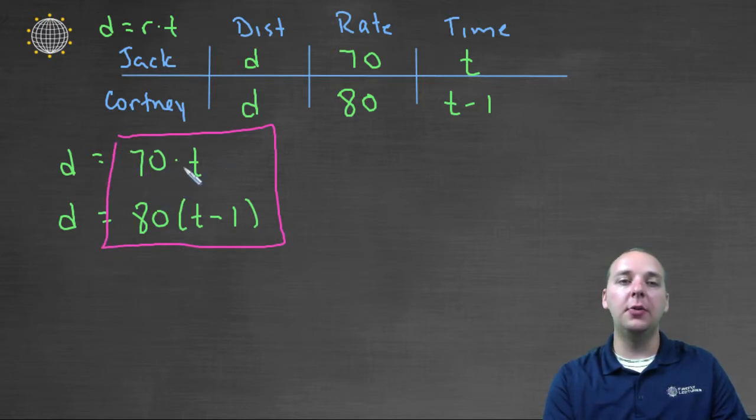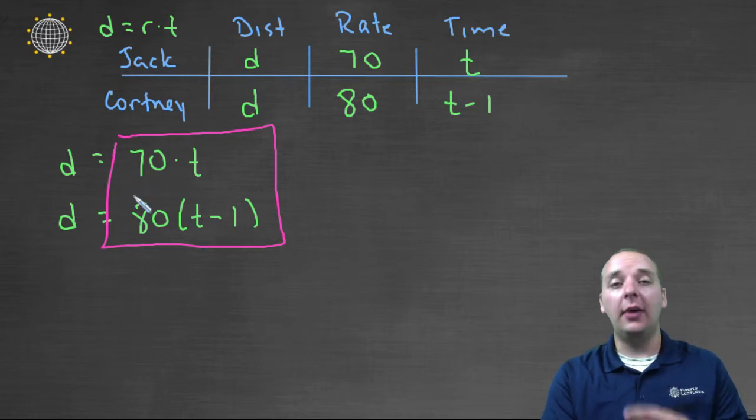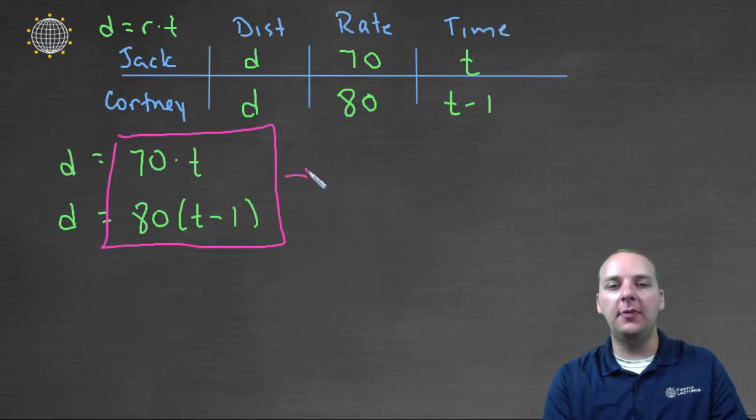The reason that is, is because they're both equal to d. I don't know what d is, but whatever d is, both of these are d. So I think it would be fair to say that seventy t must match eighty times t minus one.